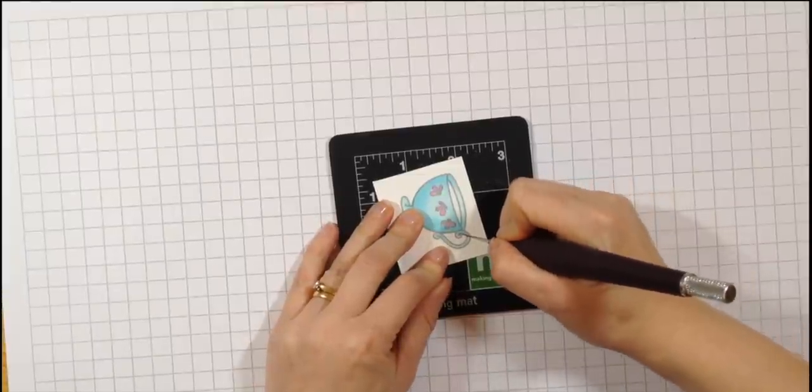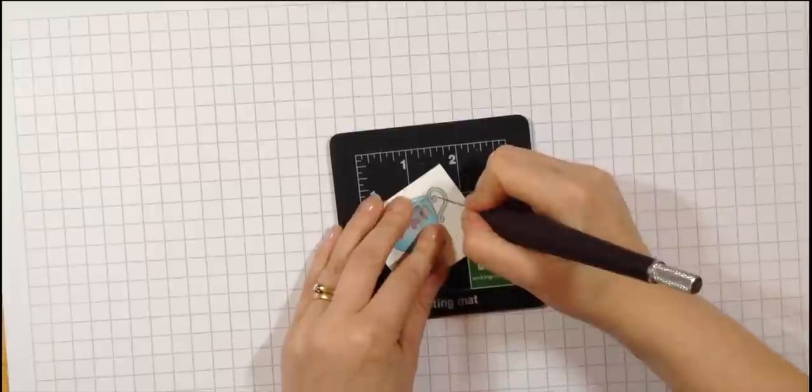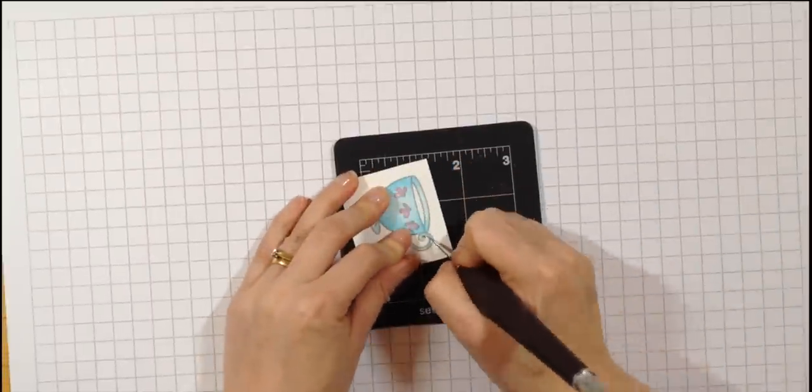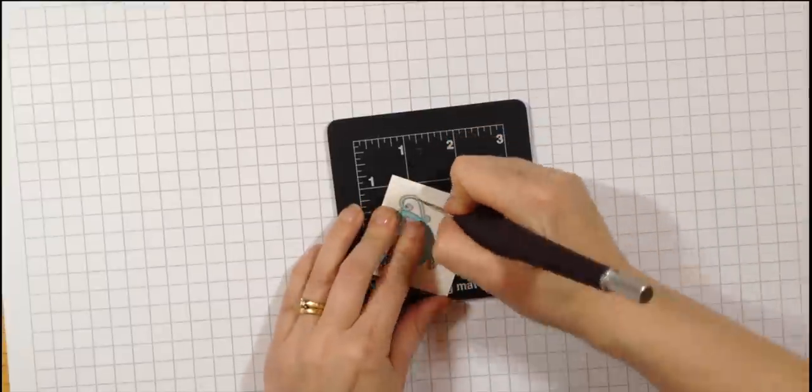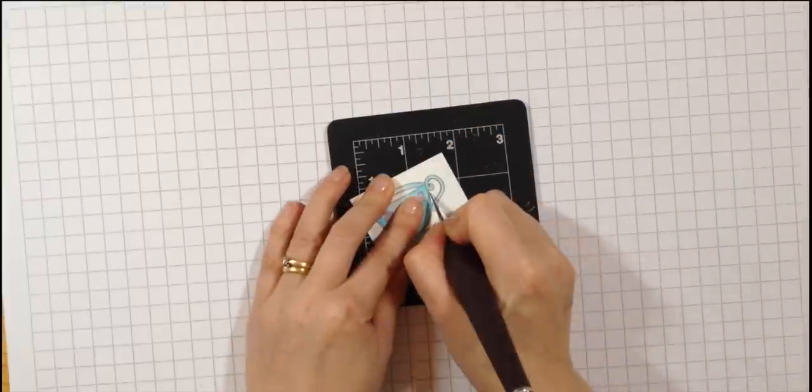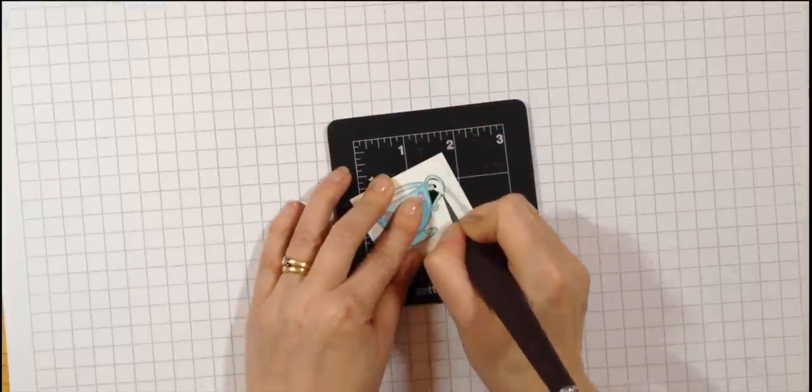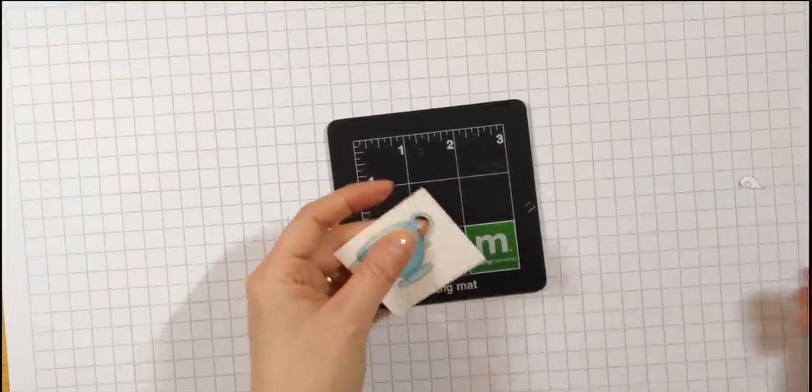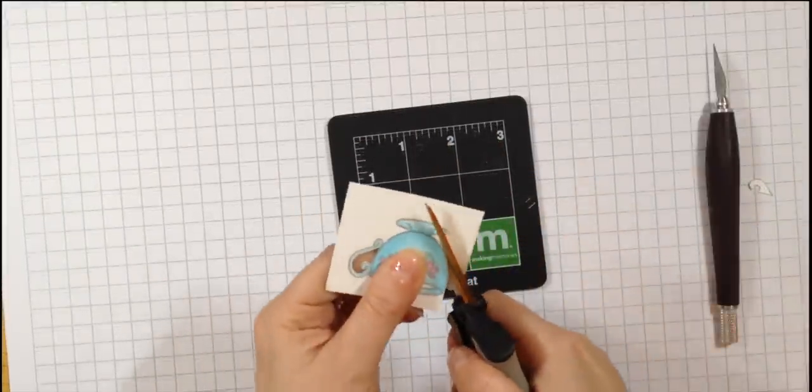Once I've colored each one in, I'm taking a very sharp scalpel knife and just going to cut the inside of the handle. This is why I'm choosing not to use the dies this time, because the die doesn't cut the inside of the handle out, and for my preference for this card I wanted to have that cut out.